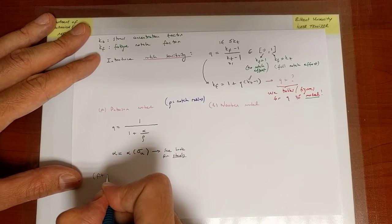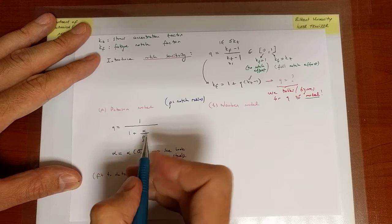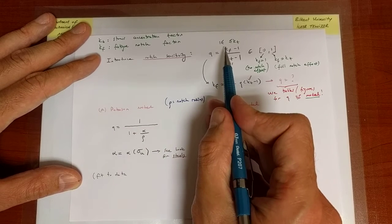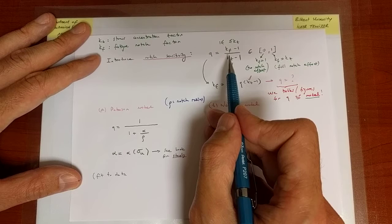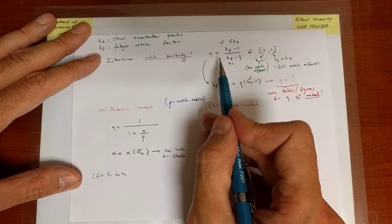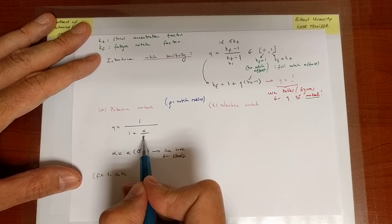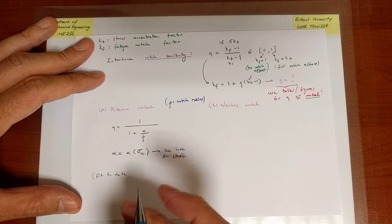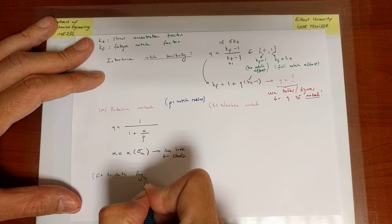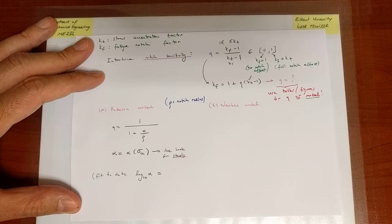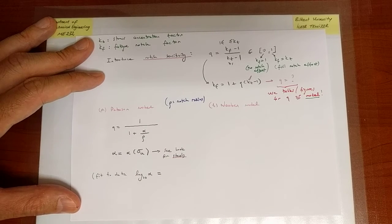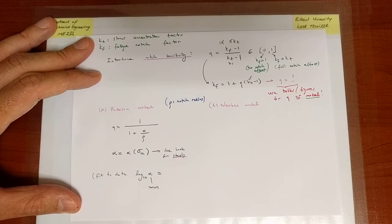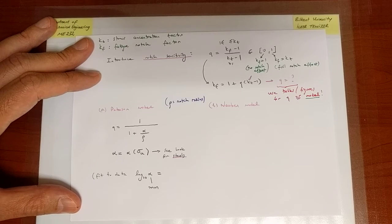The fit to data looks as follows. First of all, notice that Q is something that is dimensionless. The stress concentration factor and the fatigue notch factor are also individually dimensionless, because they relate stress to stress. So for this to be dimensionless, because this is in units of length, then alpha also needs to be in units of length. So we just need to use the correct units.